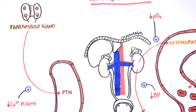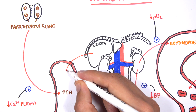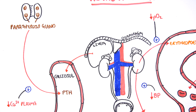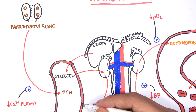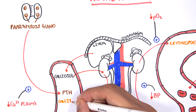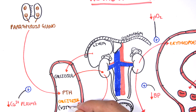The liver produces a pre-hormone called calcidiol. Calcidiol actually originates from the skin, but then it travels to the liver where it becomes calcidiol. Calcidiol then travels from the liver via blood to the kidneys, where the kidneys convert calcidiol to the active form, calcitriol. Parathyroid hormone actually stimulates this process of conversion from calcidiol to calcitriol.